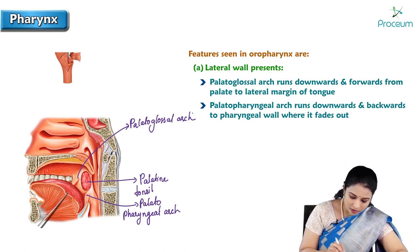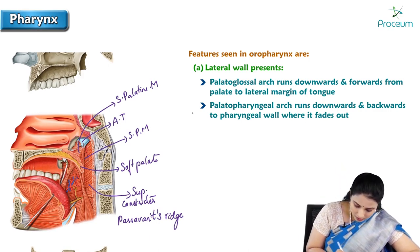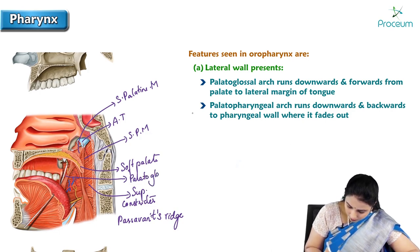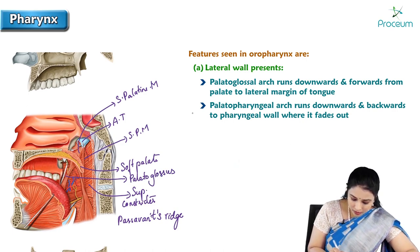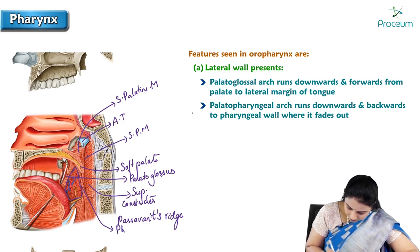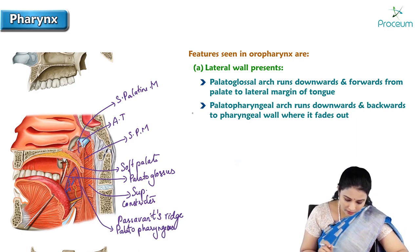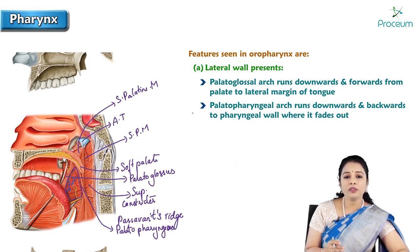Palatopharyngeus muscle helps in the formation of Passavant's ridge. In this image we can appreciate the palatoglossus and palatopharyngeus muscles. After removing the mucosa we can see the palatopharyngeus muscle — which is towards the tongue — and this is the tonsillar fossa between these two arches. We can see the blood vessels and nerves forming the tonsillar bed structure.